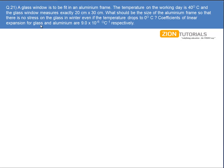It is given that there is no stress on the glass at temperature 0 degrees. So at temperature 0 degrees, the length of the glass should be equal to the length of the frame, and the breadth of the glass should be exactly equal to the breadth of the frame. In that case there will be no stress.